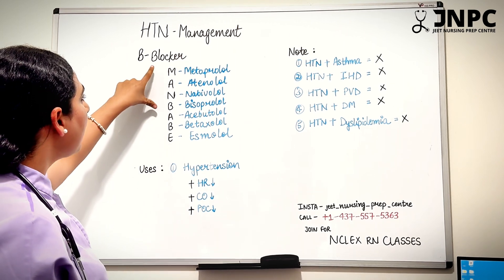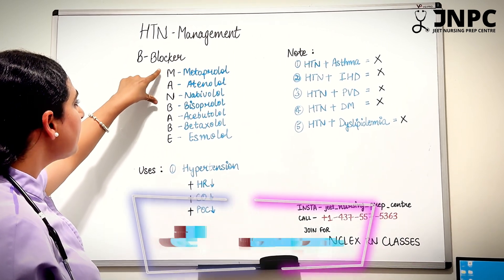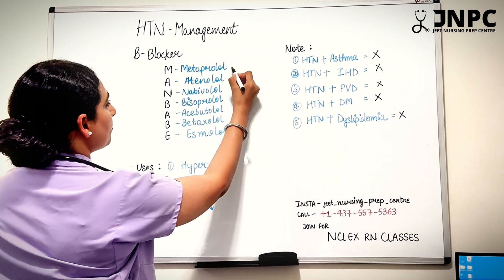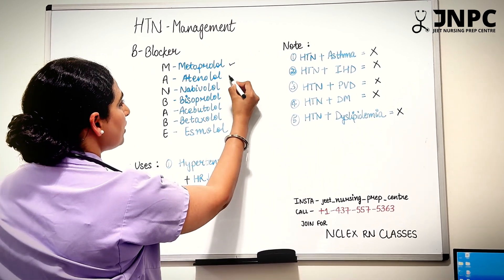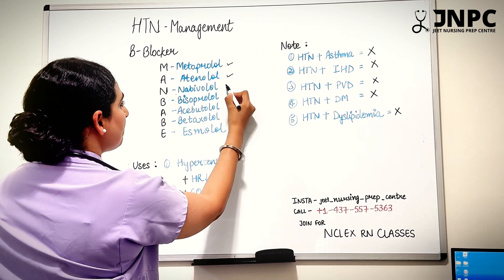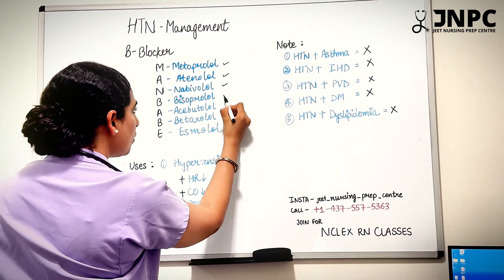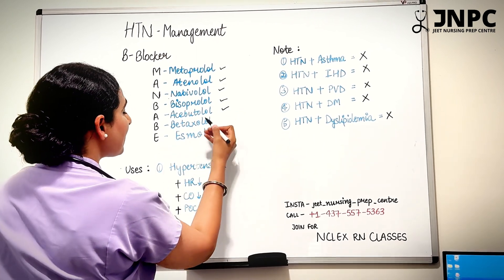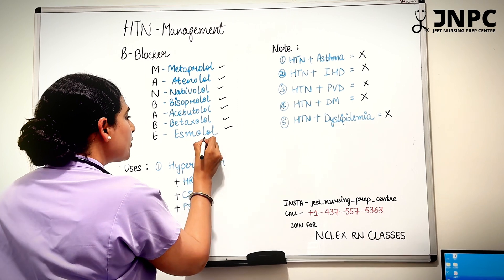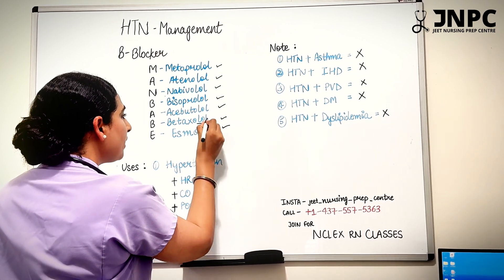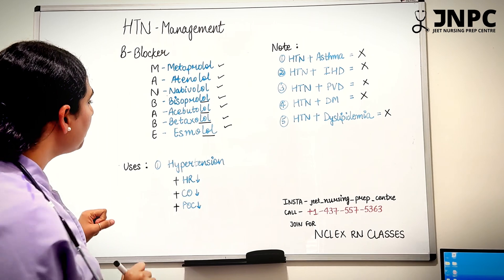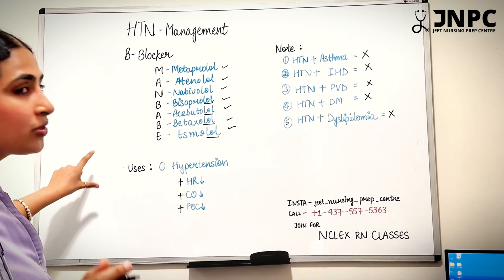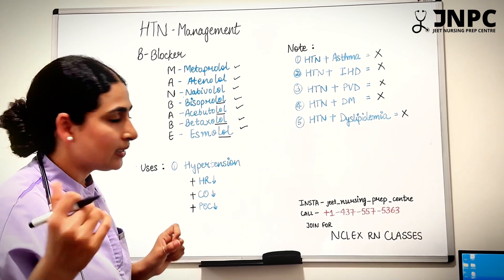is MAN BABE. How to memorize beta blockers? Just memorize this mnemonic MAN BABE, where M stands for metoprolol, A stands for atenolol, N stands for nebivolol, B stands for bisoprolol, A stands for acebutolol, B stands for betaxolol, and E stands for esmolol. You will see there is one common thing, which is 'lols' in here, right? As I said, we are going to discuss only those points which are very specific to NCLEX.